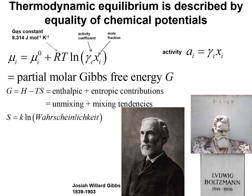In order to resolve the paradox observed in Antarctica, let us resort to the Gibbsian thermodynamics of phase equilibrium. For two phases that are in thermodynamic equilibrium, the chemical potential of any component must be equal in either phase. The chemical potential of any component is written as the chemical potential in some standard state plus R times T times ln of the activity, where the activity is the activity coefficient times the mole fraction. The chemical potential is the partial molar Gibbs free energy, where the Gibbs free energy has two contributions: the enthalpy contribution and the entropic contribution.